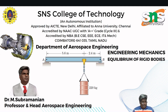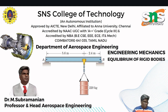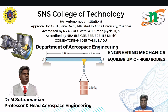Fixed support restrains both translation and rotation. Reactions for fixed support generate horizontal, vertical, and moment reactions. Roller support allows translation along the surface but prevents rotation. A roller support generates only a vertical reaction. Understanding the support types and the reactions they generate is crucial for solving problems related to static equilibrium, structural analysis, and the design of various engineering structures.